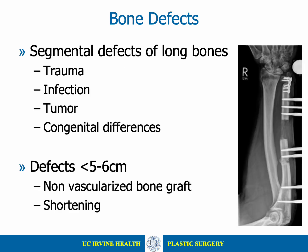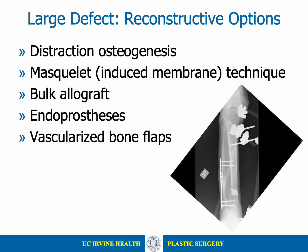Segmental diaphyseal defects of long bones are a challenging problem and can be caused by trauma, infection, tumors, or congenital differences. Classically, defects smaller than 5 to 6 centimeters in the extremities can be treated with non-vascularized bone grafting or shortening, while larger defects or defects recalcitrant to other grafting methods require reconstructive procedures. There are numerous reconstructive options for diaphyseal defects, each with advantages and disadvantages.